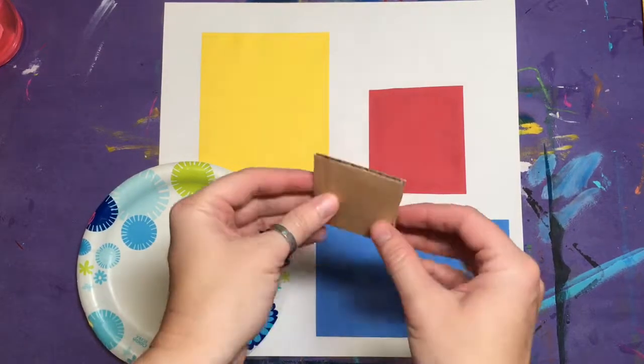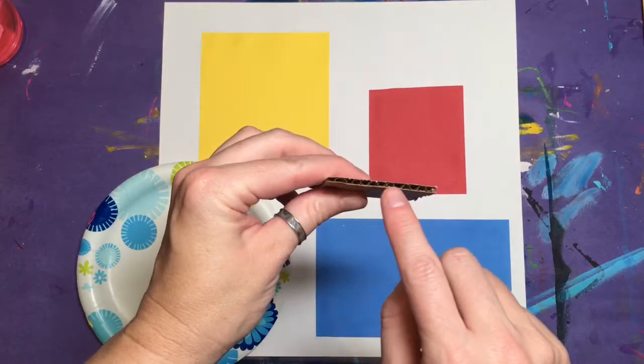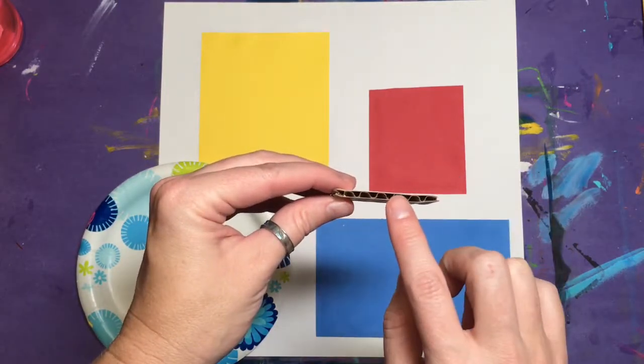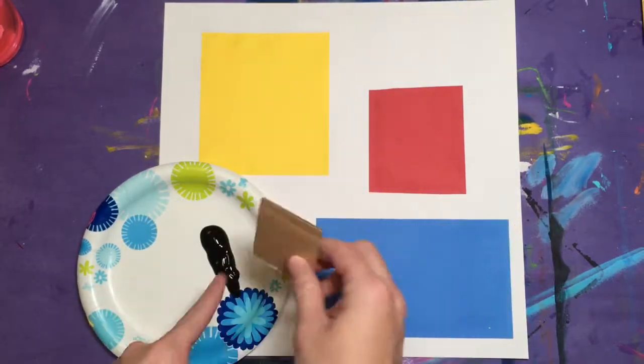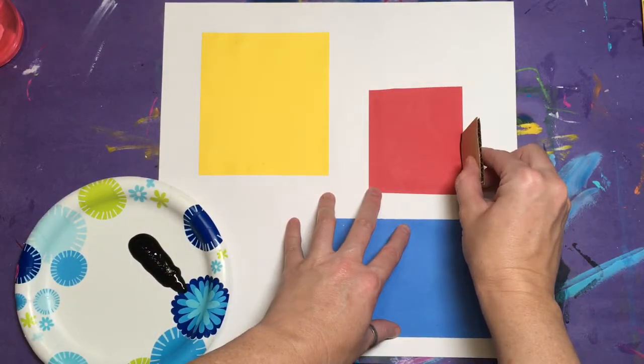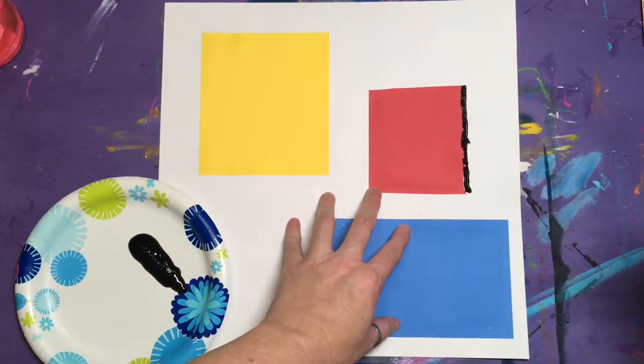Find the edge of your cardboard scrap that has the wavy line across it, not the straight side, the wavy side. Dip that wavy edge into the black paint and then push down on your white paper right next to one of your shapes and pick it up.